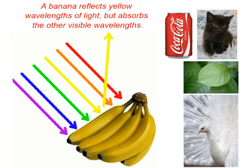As you know, objects absorb certain wavelengths and reflect others. So the color of an object depends on which wavelengths of light are shining on it and which wavelengths are reflected. In the case of our bananas, we have all the different visible wavelengths of light shining on those bananas, and only the wavelengths that are the yellow color are being reflected. Therefore, the bananas look yellow.